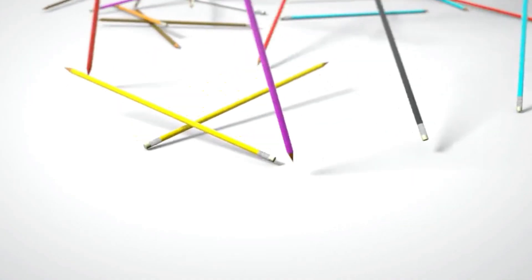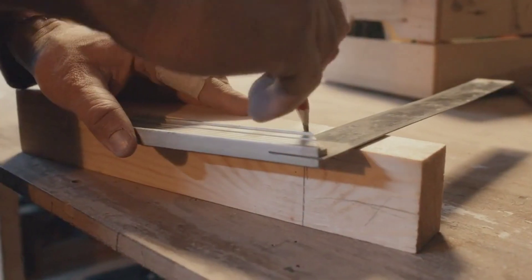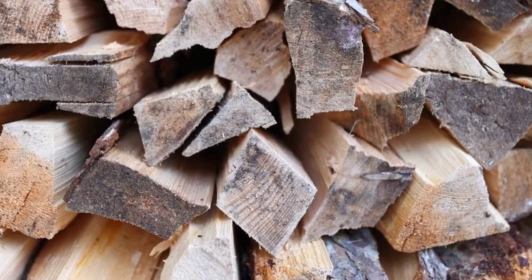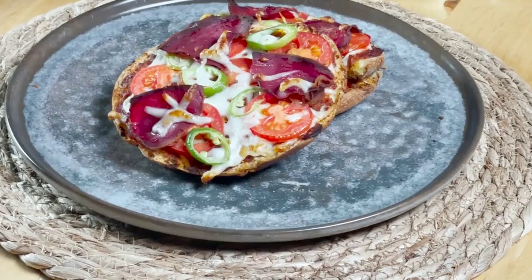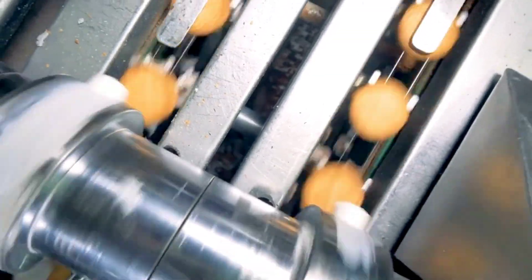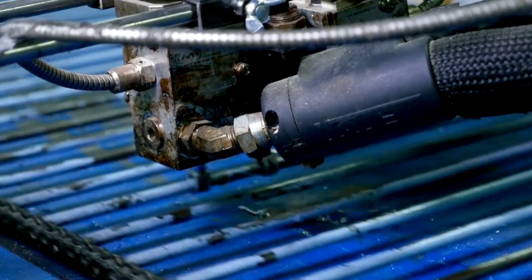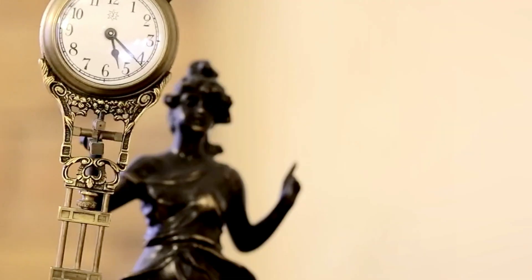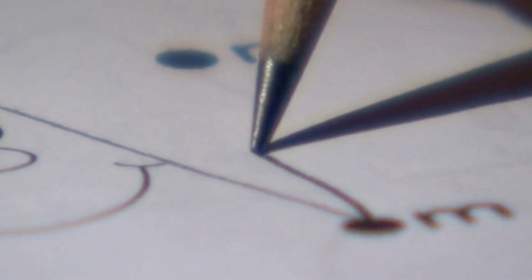The pencil core, fragile and delicate, needs protection. That's where the wooden case comes in. This protective casing is typically made from slats of cedar wood, renowned for its pleasant aroma, stability, and widespread availability. These slats are cut and grooved to form a snug channel for the pencil core. Imagine a sandwich where the bread is the wooden slats and the filling is the pencil core. The graphite core is gently laid into the groove of one slat, and then a second slat is placed on top. A special glue is applied to ensure these parts adhere together, creating a strong bond that will stand the test of time. As the glue dries, the pencil starts to take its familiar form.